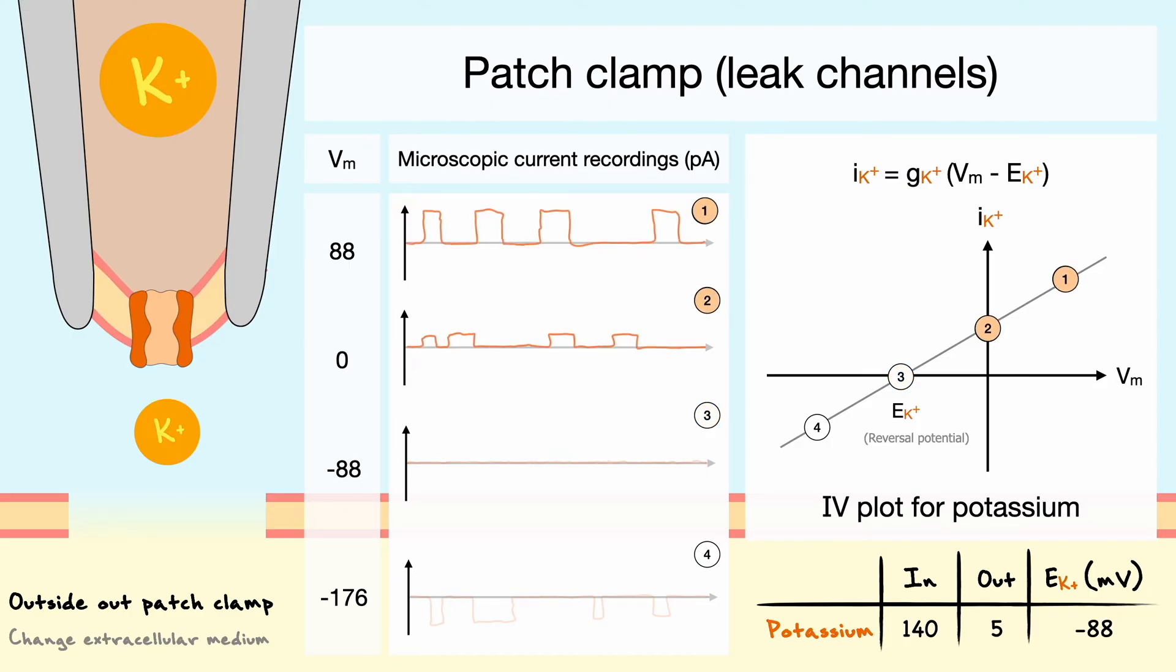Between trials 1 and 2, the increase in current simply comes from the fact that the driving force for potassium has increased and in the fourth trial, the inward current happens because the driving force has switched signs.